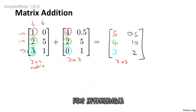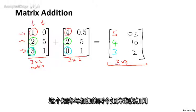So you can only add matrices of the same dimension and the result will be another matrix that's of the same dimension as the ones you just added.